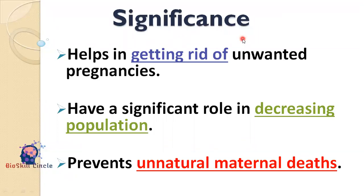The significance of MTP is that it helps in getting rid of unwanted pregnancies which may be harmful or even fatal to the mother, fetus, or both. It also plays an important role in controlling population, and MTP prevents unnatural maternal deaths.